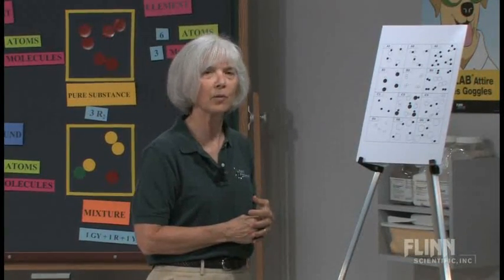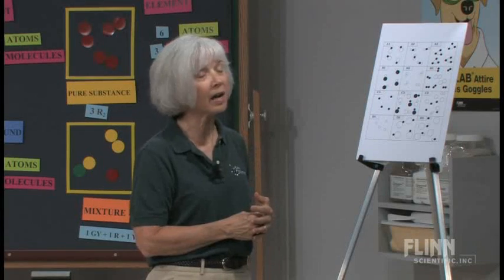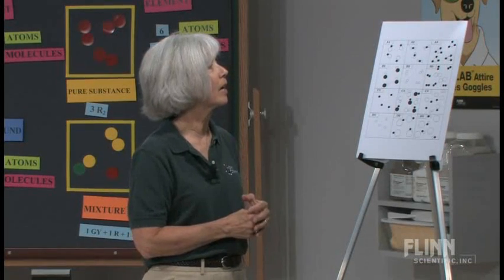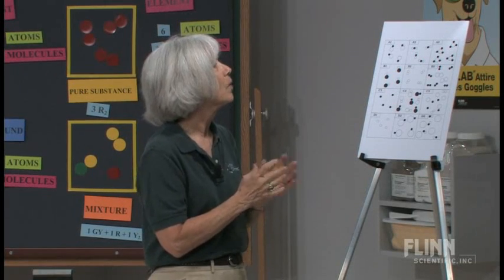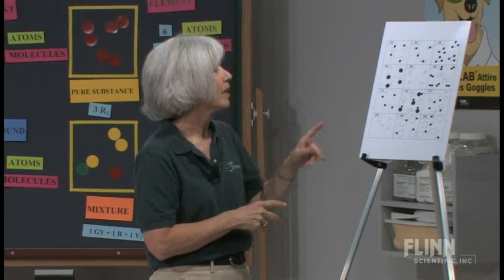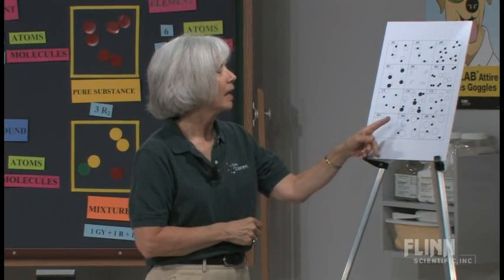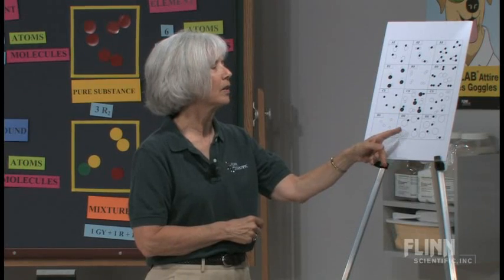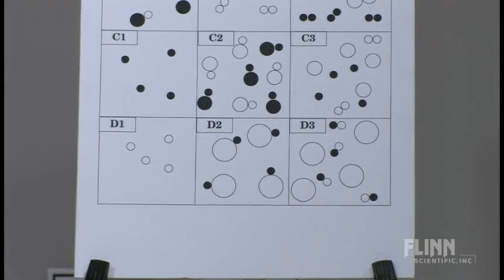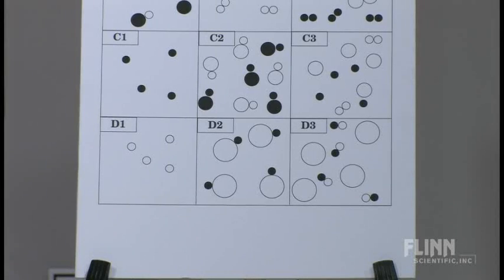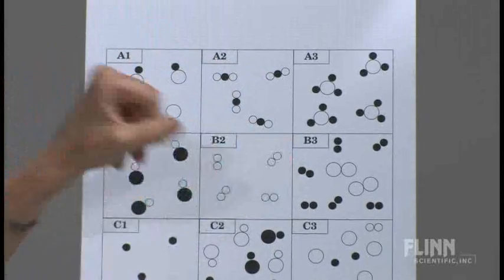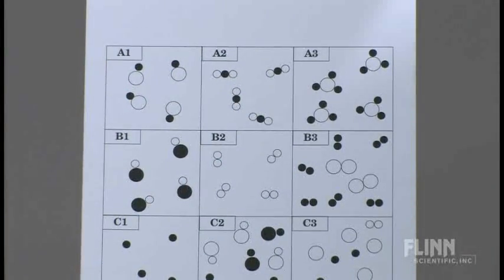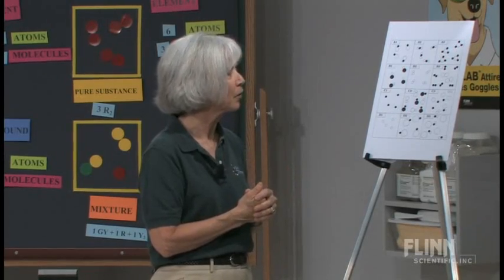And I do want to mention that there is an additional way to use this particular diagram, and that is when you get to a unit on chemical reactions. Because in chemical reactions, we talk about types of reactions. And so you can say, okay, what's happening when you go from taking D1 and you mix it with D2 and you get D3? And that's a simple replacement. Or what happens if you go from A3 to B3? Decomposition. So it's another way to reinforce that.